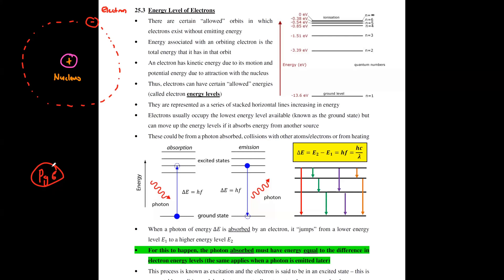If you look at page 6 of your quantum physics notes, this one is regarding energy level of electrons. When you're talking about an electron, you remember that an electron always tends to orbit around a nucleus — this is the general structure of an atom that you have learned before.